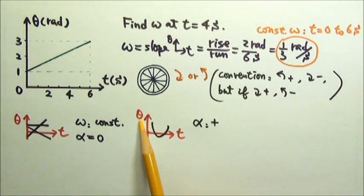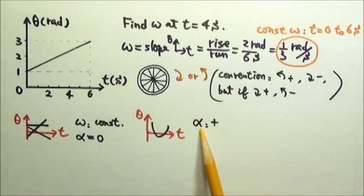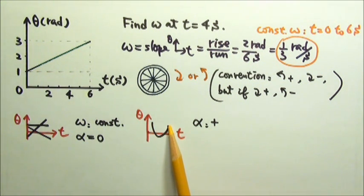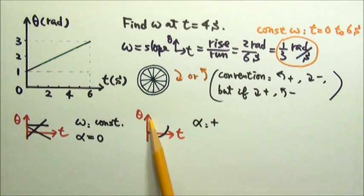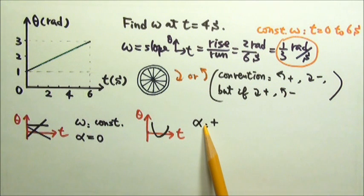If the angular position as a function of time graph is any part of an upward curve, that means the angular acceleration is positive, because the slope changes in the positive direction. The slope starts out very negative, gets less and less negative, over here the slope is 0, and then the slope becomes more and more positive. So omega changes in a positive direction, that means the angular acceleration is positive.